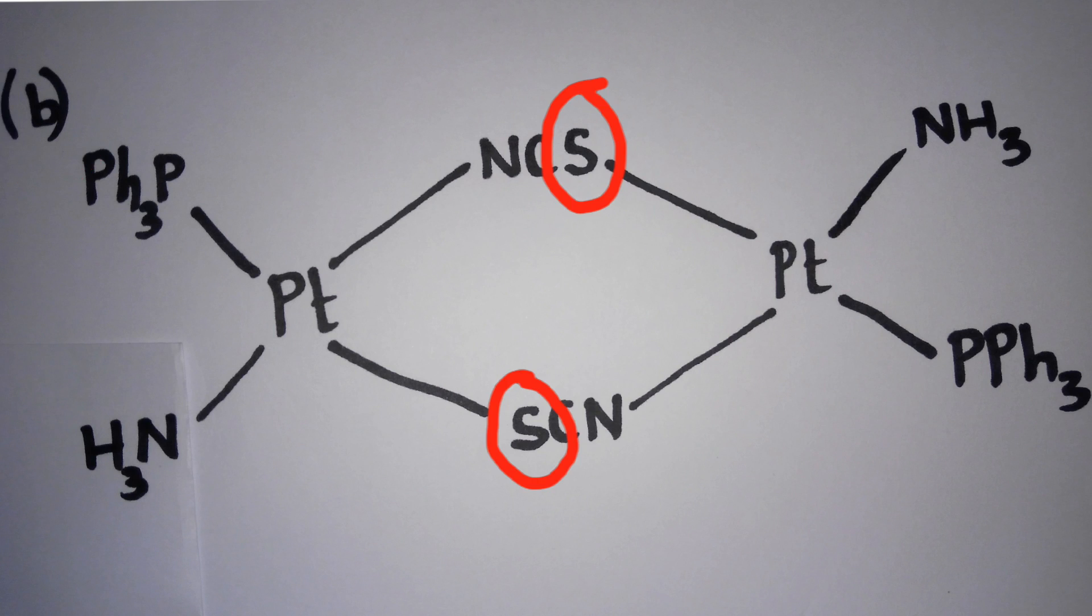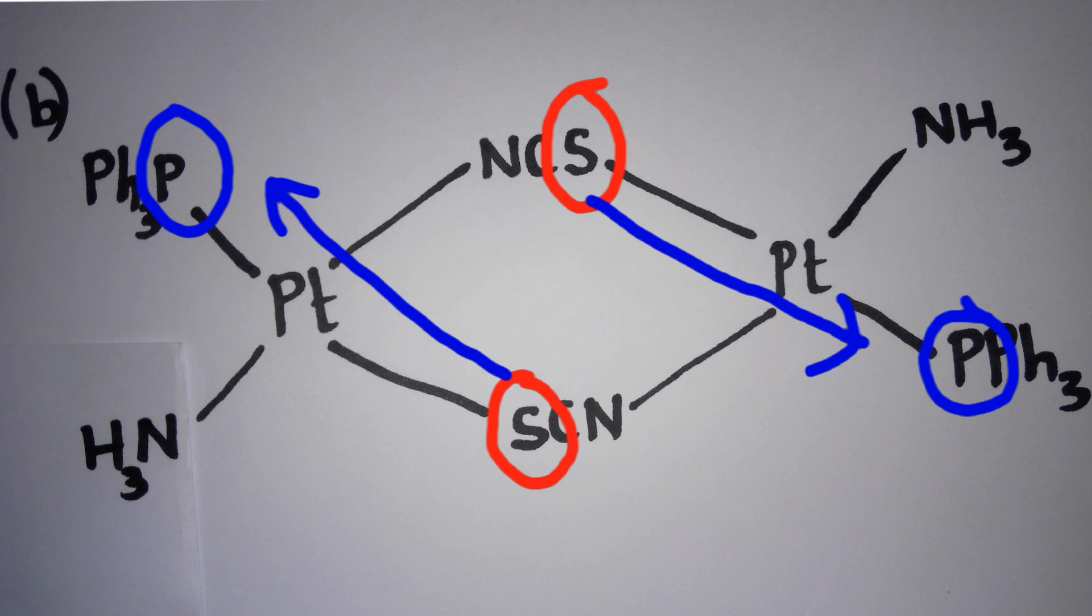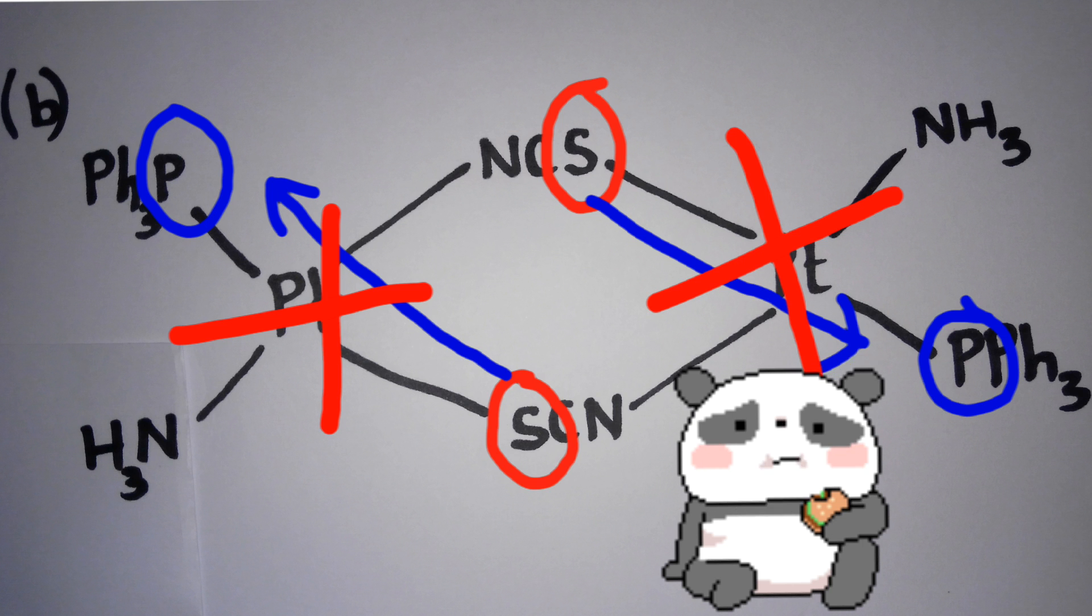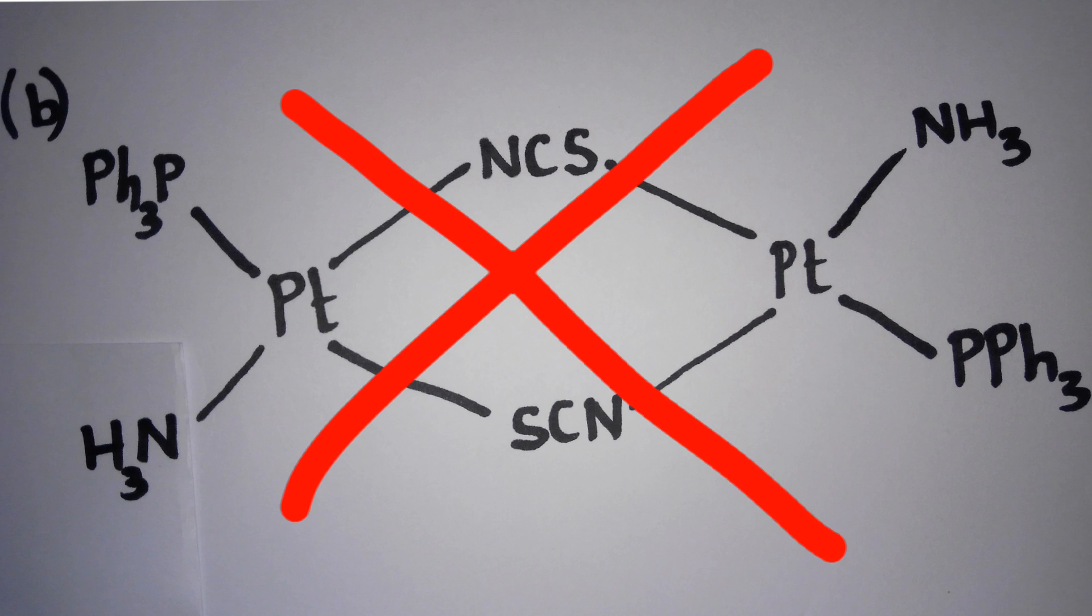In option B, both of these sulfur are trans to the phosphorus, which makes it unstable. And option B becomes the wrong choice.